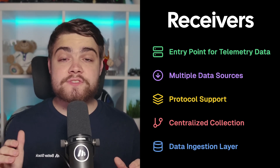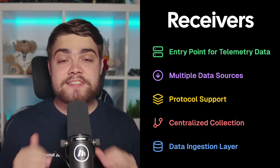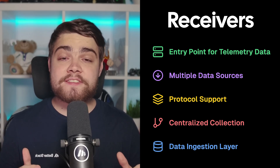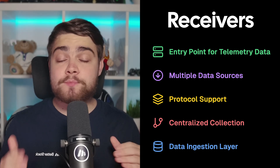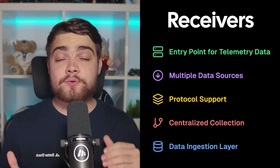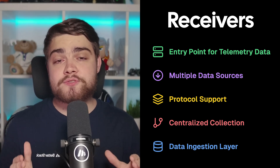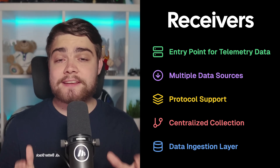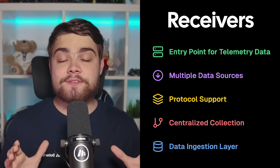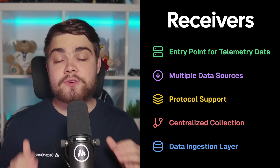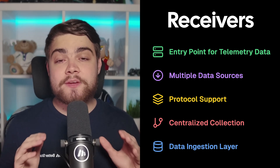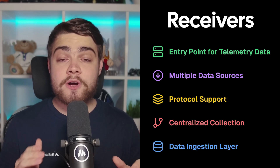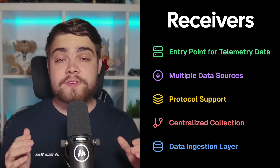Starting with receivers, these serve as the way you actually send your data to the collector. For a Node app, for example, if you set this up with OpenTelemetry and you have the OpenTelemetry SDK, you'd set up your exporters to use the OpenTelemetry protocol to send your telemetry data to the collector. You can actually have several sources of telemetry data sending to a single collector, and the collector supports a wide range of open source and commercial protocols for receiving that data — not just the OpenTelemetry protocol itself.